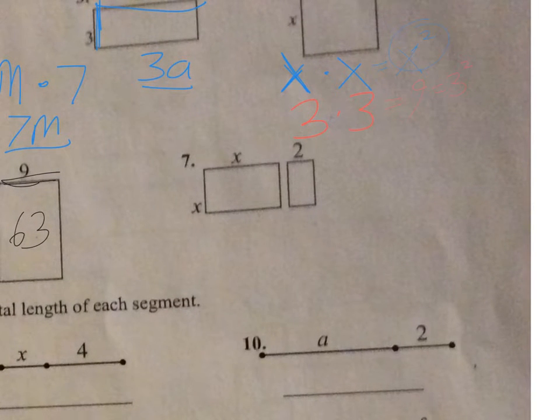This one is going to be very similar to number 4. We have x times x. So this is x squared. And then 2 times x. So this would be 2x. And that would be the area of each individual rectangle there.